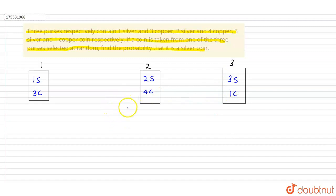So what do we need to do? We need to select one coin from one of the three purses randomly, and we need to find the probability that it is a silver coin.